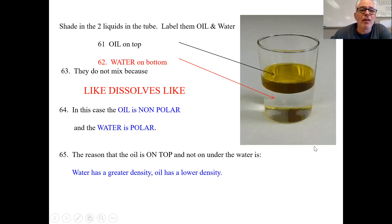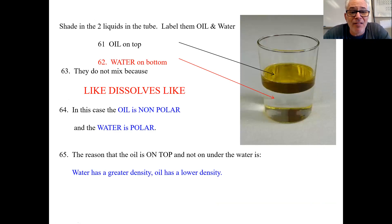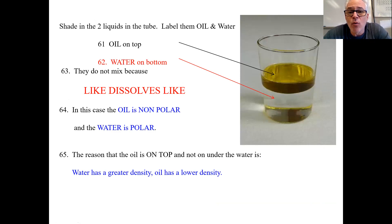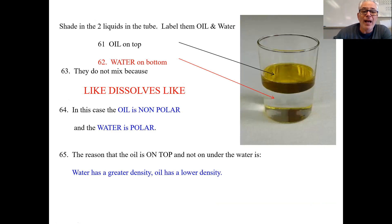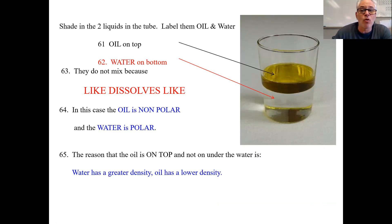Oil's on top, water's on the bottom — how come? Like dissolves like. In this case, the oil is non-polar and the water is polar. The reason the oil is on top is because oil has a lower density. Water has a greater density, and lower densities always float. That's why ice floats on water.